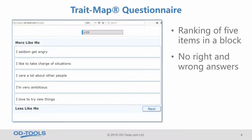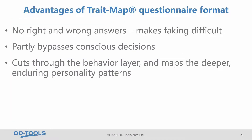All personality questionnaires claim that there are no right or wrong answers. But with TradeMap, this is really true. As much as possible, we try to achieve that there are really no right and wrong answers in the TradeMap questionnaire. It is very difficult to intellectually crack this questionnaire, which makes faking difficult.